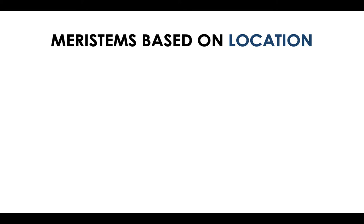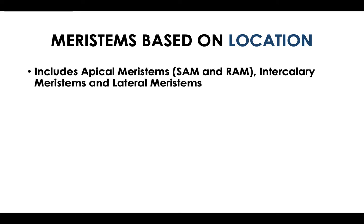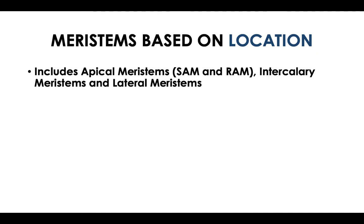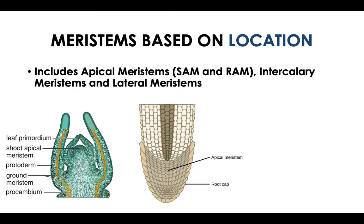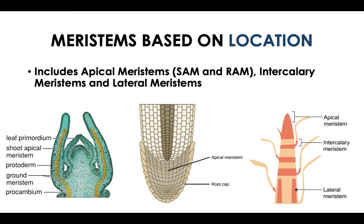According to location, aside from the shoot and root areas, a special meristematic region common for grass species — called the intercalary meristem — can be found mostly near the nodal area of the plant. A node is a part of the plant where commonly leaves or branches emerge.